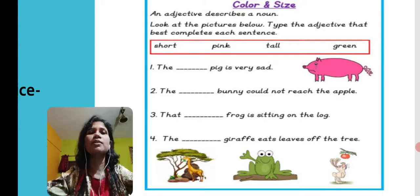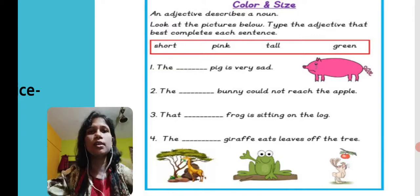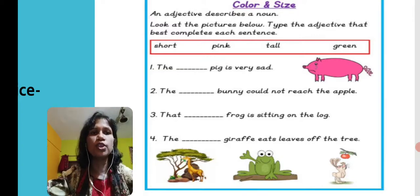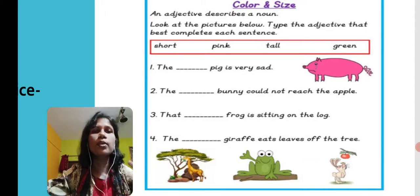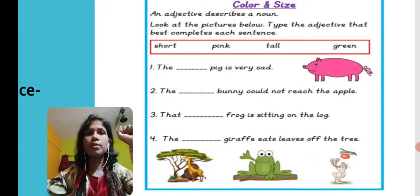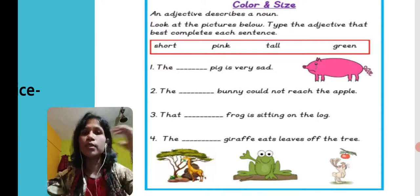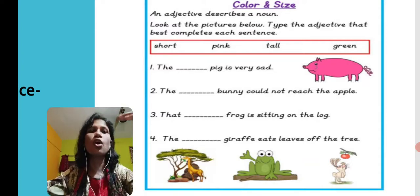The next is: The blank bunny could not reach the apple. Here in this picture you can see there is a bunny who is not able to reach the apple. Why? Because he is very short. We have to write: The short bunny could not reach the apple.